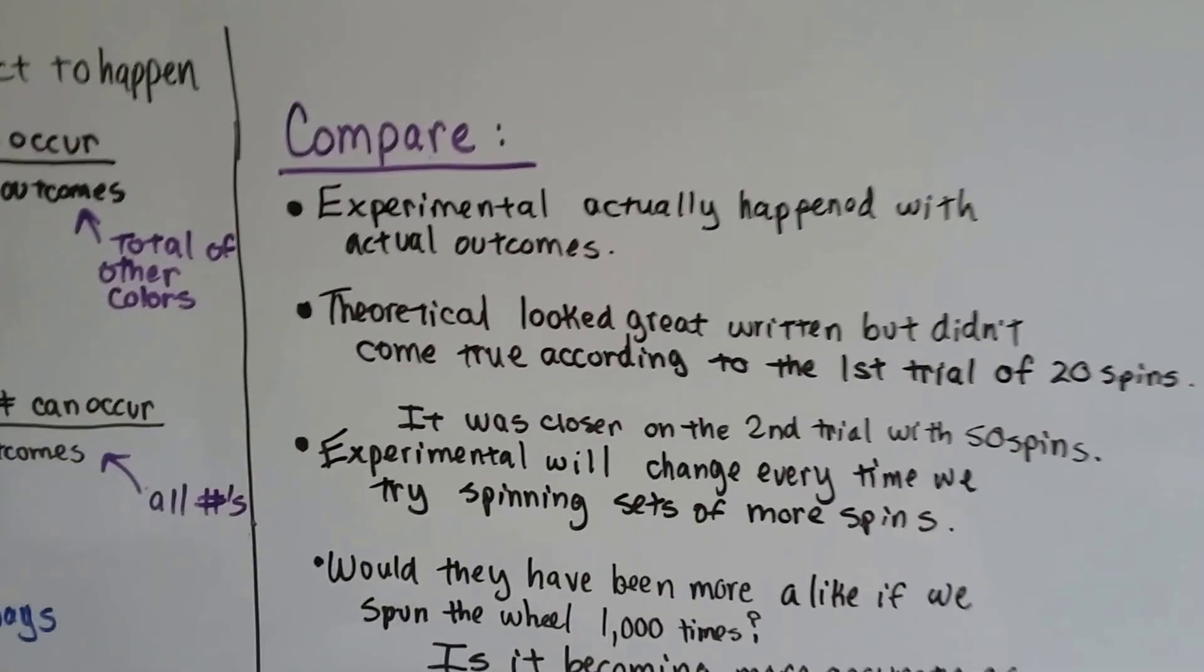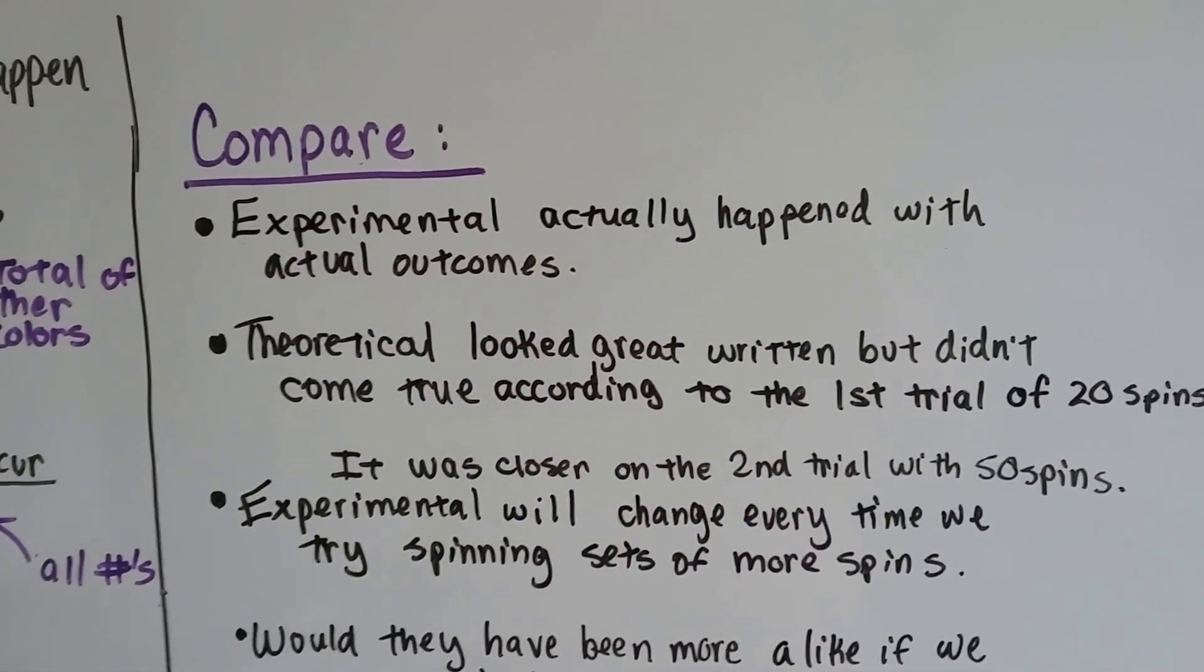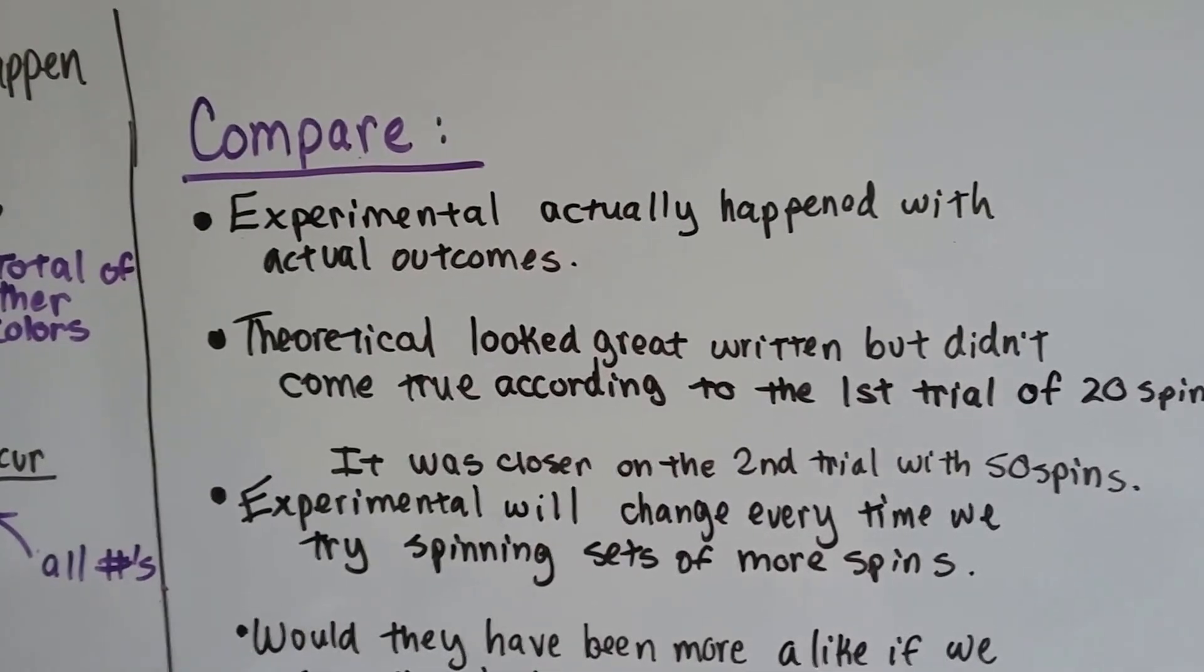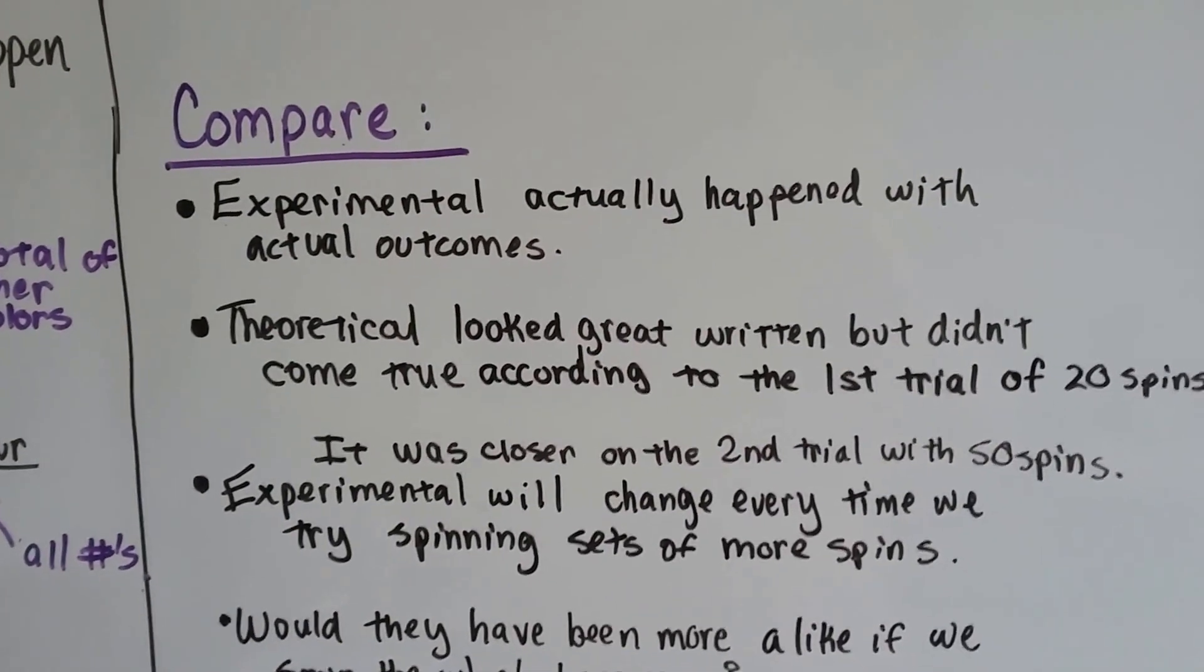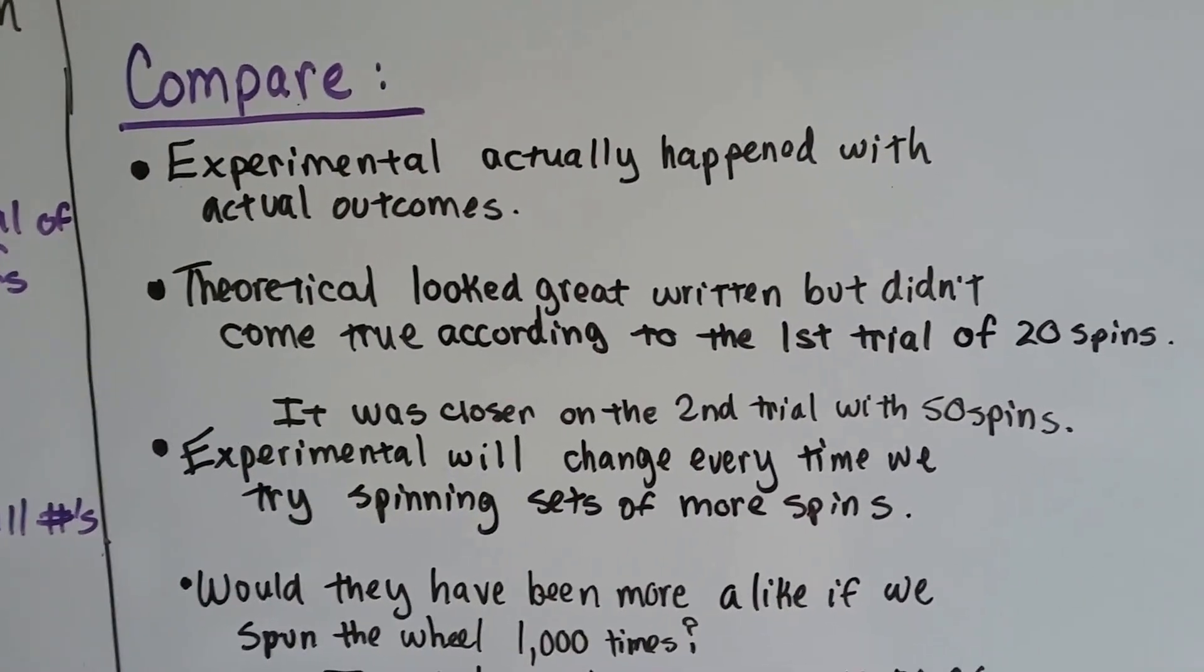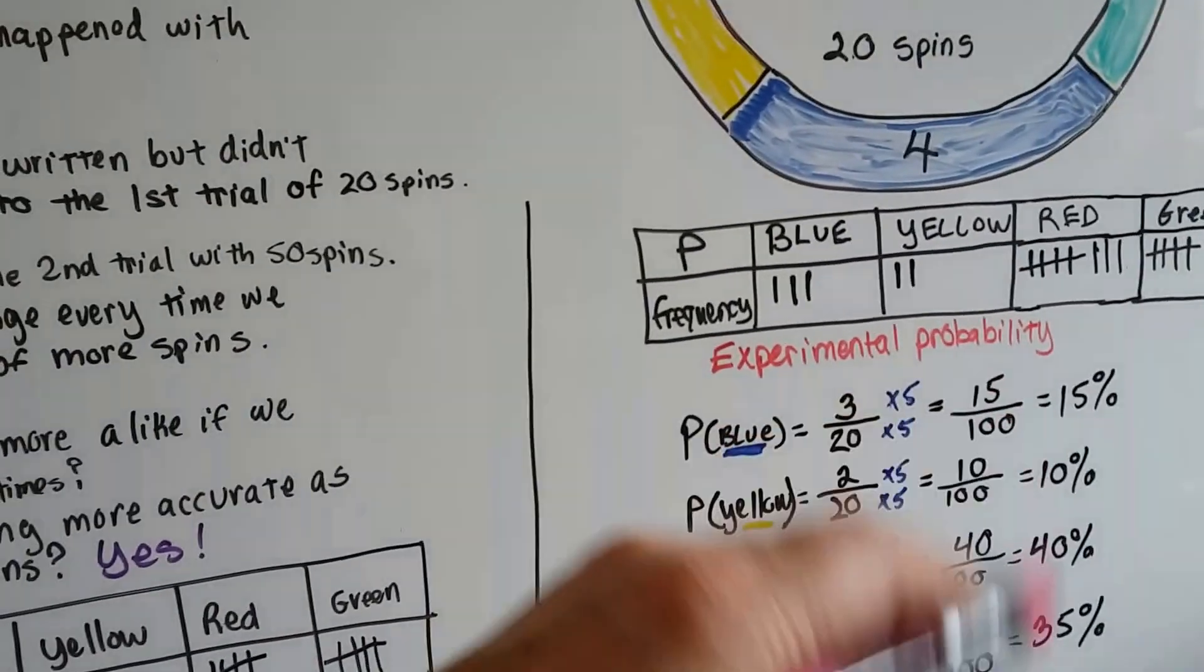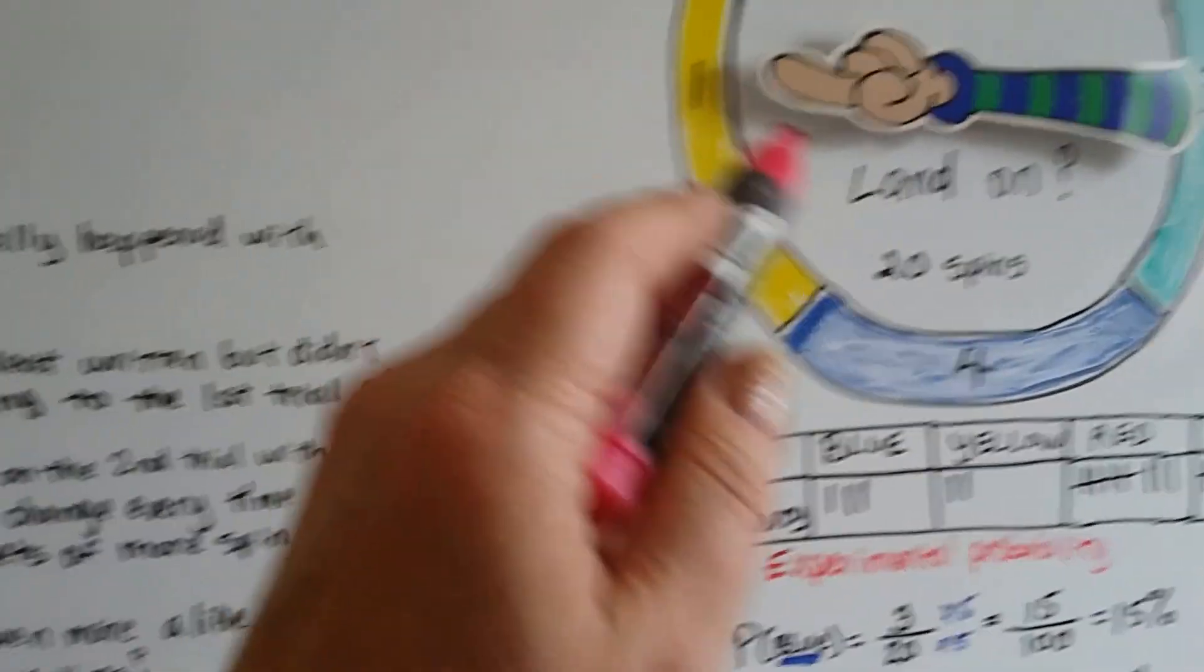So, my experimental probability actually happened with actual outcomes, compared to the theoretical one, and I just looked at the paper and figured what would happen. The theoretical one looked great written, but didn't come true according to the first trial of 20 spins. It was way off, wasn't it? It's not 25% of the time that it was landing on each color.